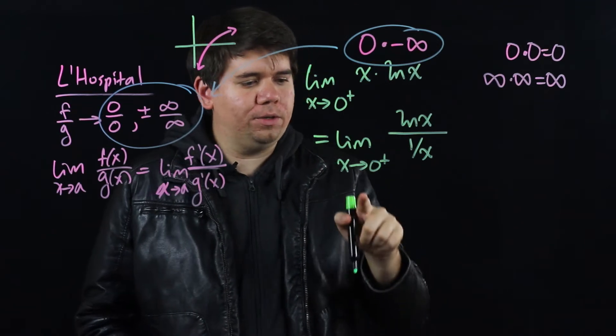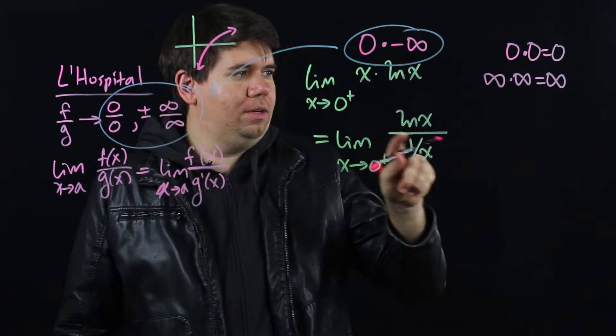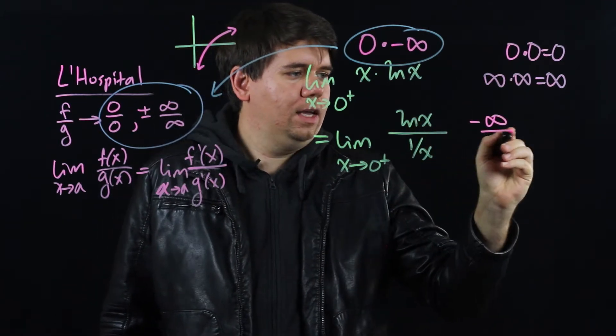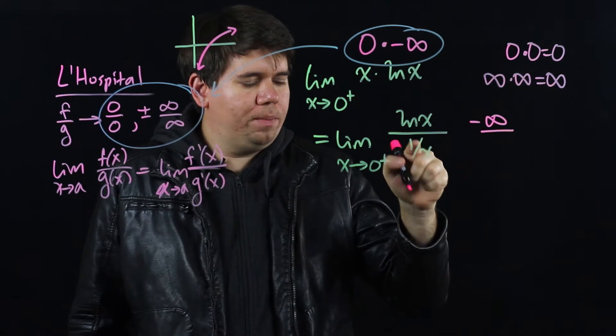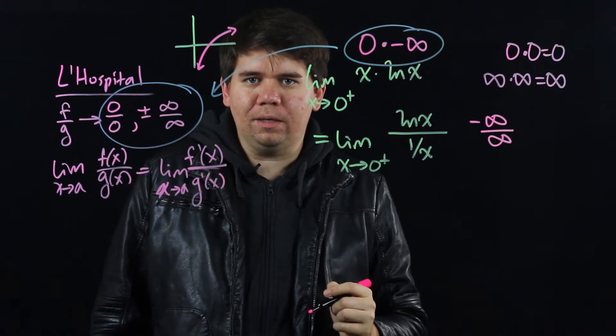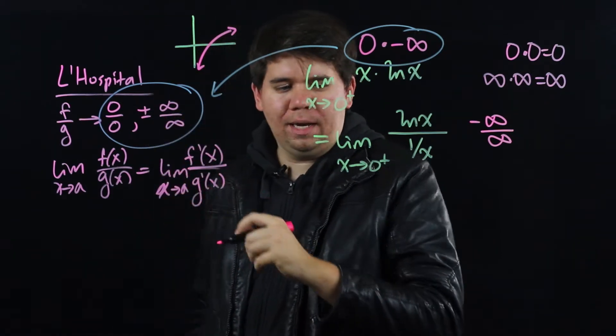Let's see where the top and bottom are going to. As x goes to 0 from the right-hand side, your natural log is still going to infinity, negative infinity. And 1 over x will be blowing up to infinity. So now it's of the form infinity over infinity. So it's of the correct form that we can now apply L'Hopital's rule.